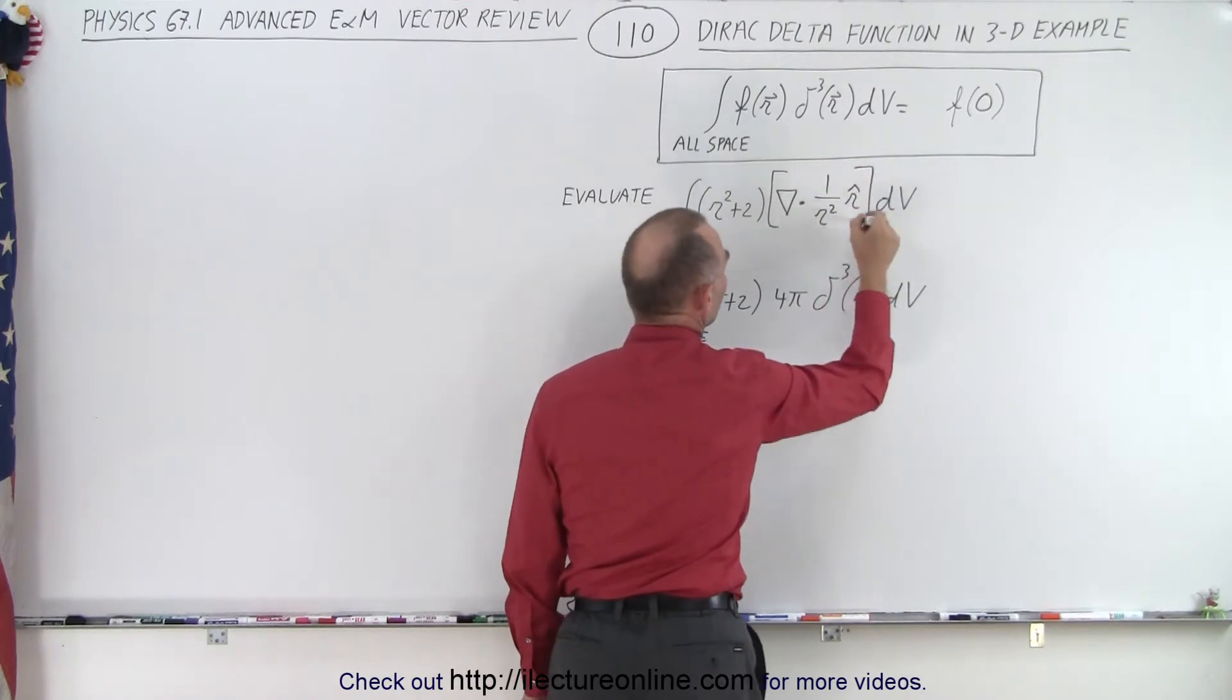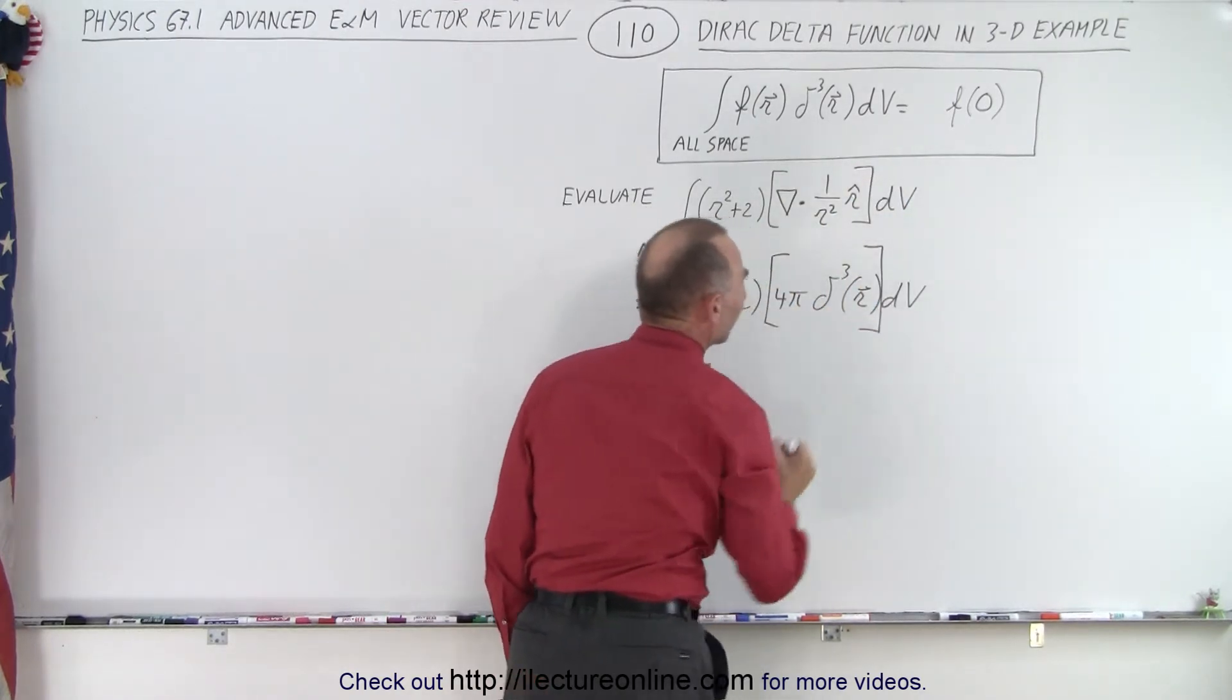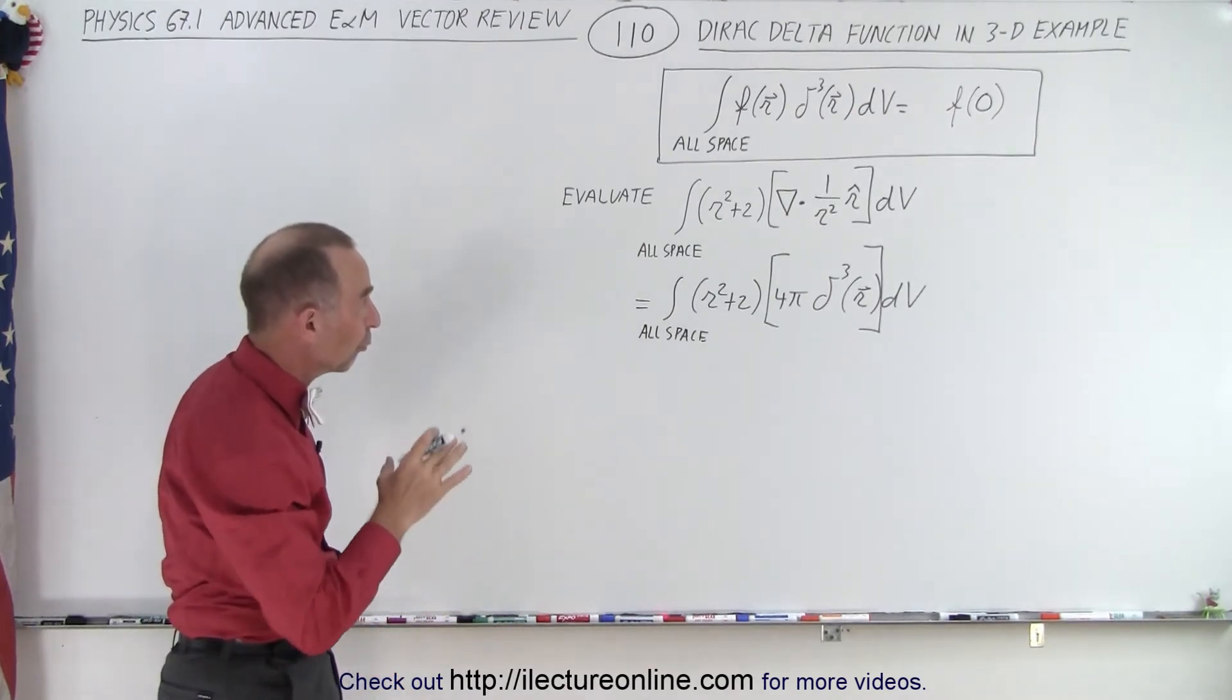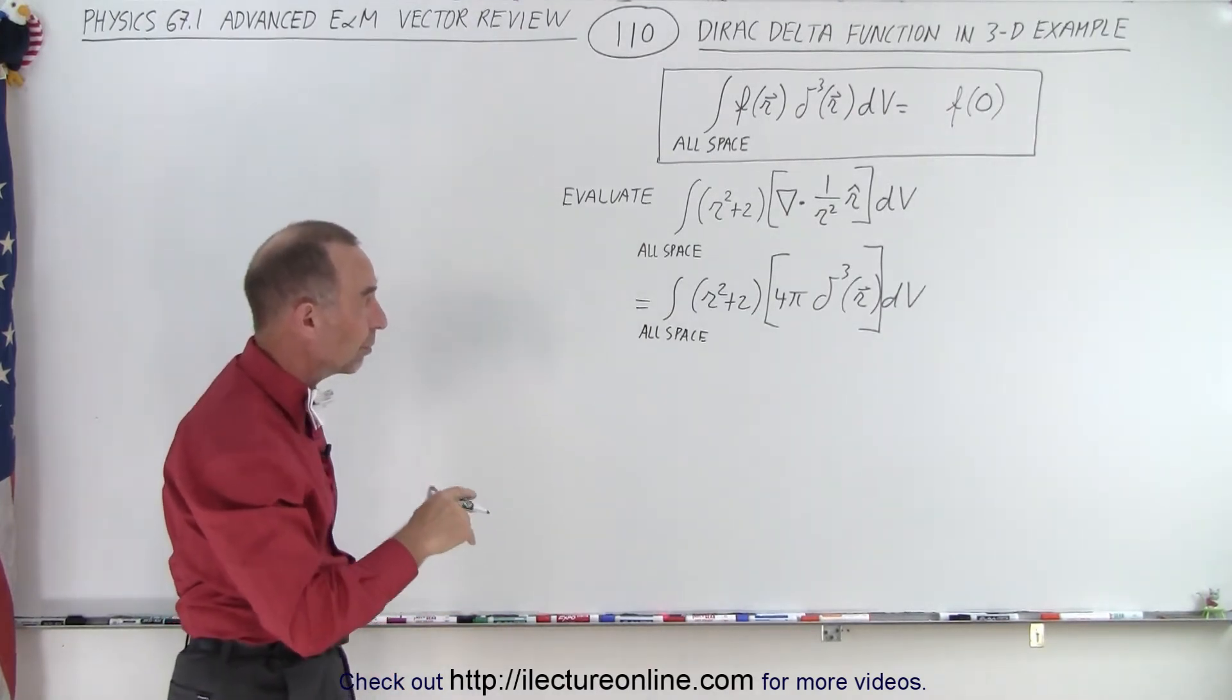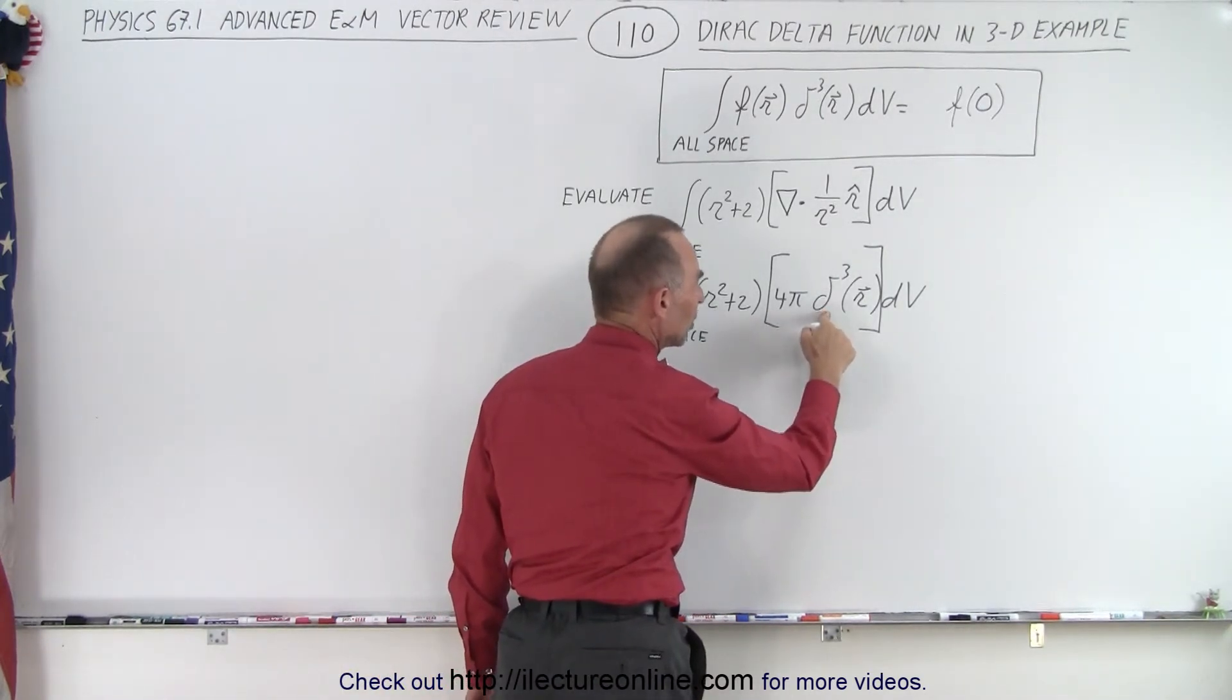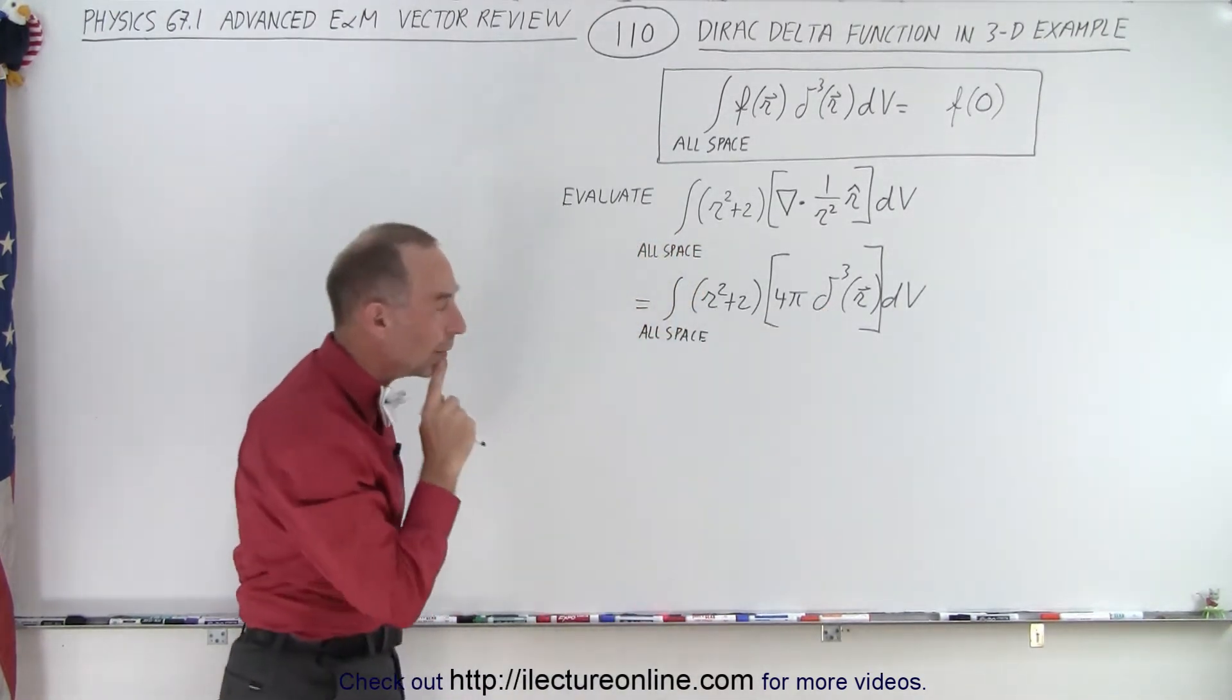So what we've done is we replaced this quantity right here in the integral by what the equivalent is by definition. The divergence of 1 over r square in the r direction can be replaced by 4π times the Dirac delta function in three dimensions.